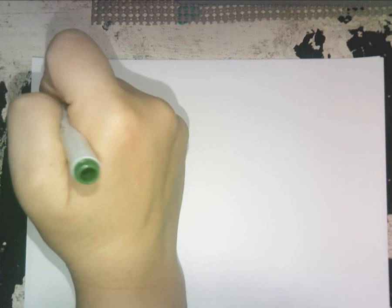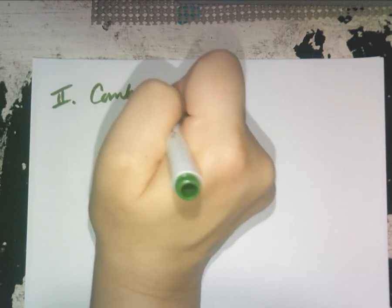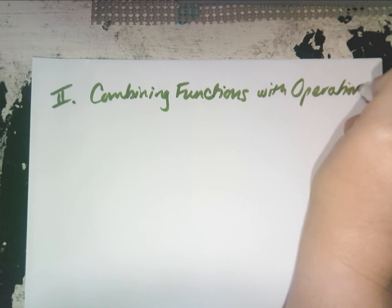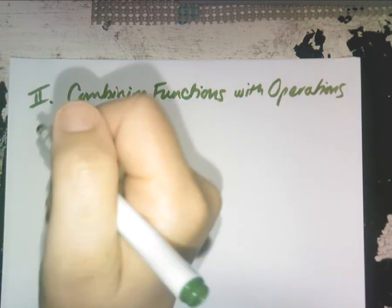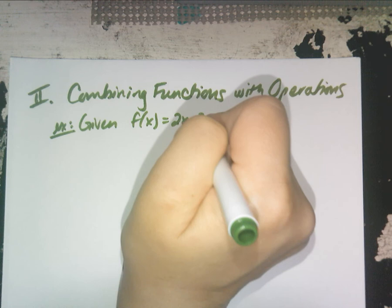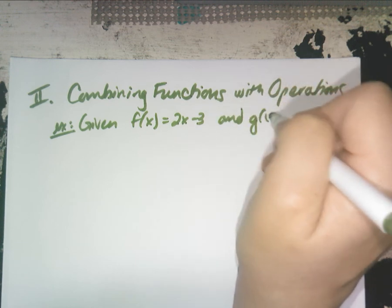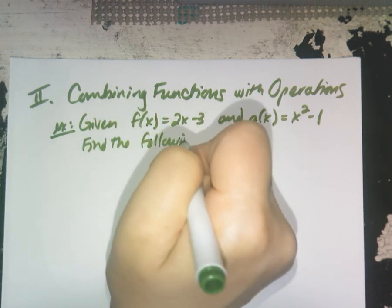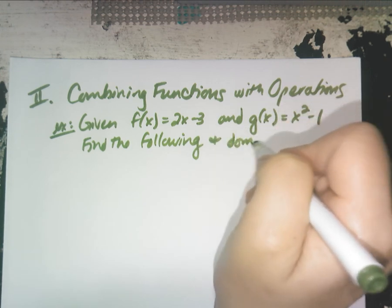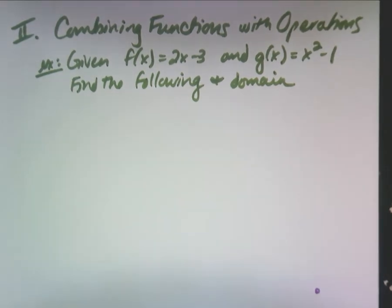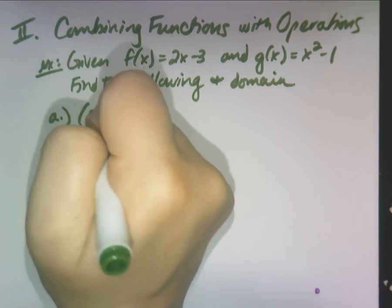Now we're going to talk about operations on functions — combining functions with operations. Here's an example: f(x) = 2x − 3 and g(x) = x² − 1. We'll find the following operations and their domains, because I think the book is going to make you find them. It's really just about remembering your notation.